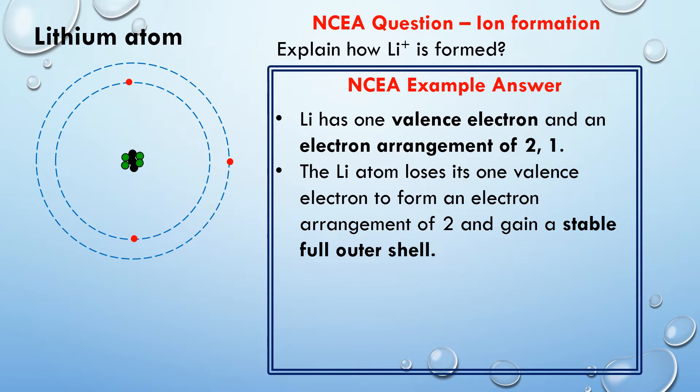So in this explanation I've said that the lithium atom has to lose one electron. So I'm specific to how many electrons it's lost and making sure I'm putting down that phrase: stable full outer shell. Okay, so that's what the atom did. So this is now what the ion looks like. The ion now has an electron configuration of just 2.